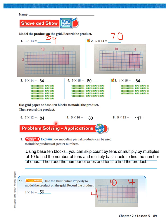Now if you did not get these correct, don't go any further in the lesson. Stop. Go back to the first slide, watch the first slide again, the beginning of the video again, or contact me and I'll give you some help. It says explain how modeling partial products can be used to find the products of greater numbers. Using base 10 blocks, you can skip count by tens or multiply by multiples of 10 to find the number of tens and multiply basic facts to find the numbers of ones. Then you just add the ones and the tens to find the product.